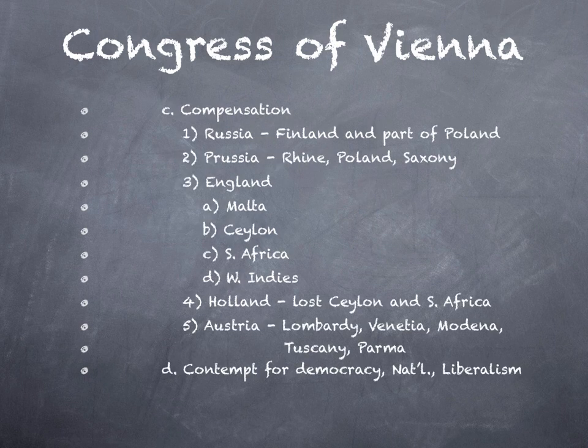As for territorial compensation: Russia gets land in Finland and part of Poland. Prussia gets some land along the Rhine, the remainder of Poland, and part of western Germany called Saxony. England gets major concessions — Malta, Ceylon, South Africa (which is enormous but will eventually lead to the Boer Wars since the original settlers were Dutch), and territory in the West Indies. Britain is compensated quite handsomely for its role in the Napoleonic Wars. Holland, having cooperated with Napoleon, ends up on the losing side and loses Ceylon and South Africa to Great Britain. Austria gets significant gains, especially in northern Italy — Lombardy, Venetia, Modena, Tuscany, and Parma all come under Austrian rule.